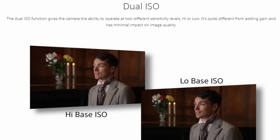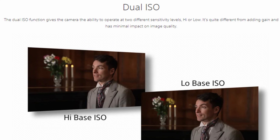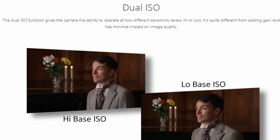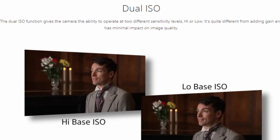The Sony A7S Mark III is a dual ISO capable camera, but do you know where it is? Do you know what ISOs you should be using? In this video, I'm going to show you two ways of finding your native ISO.